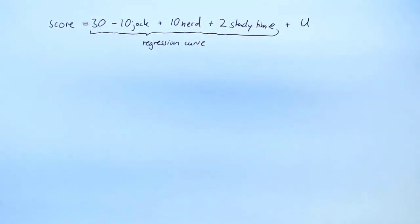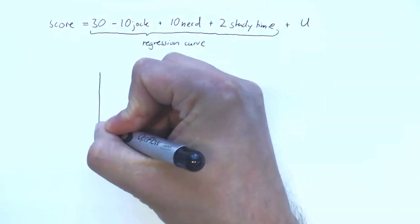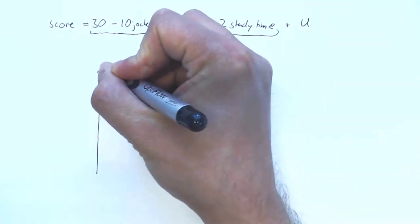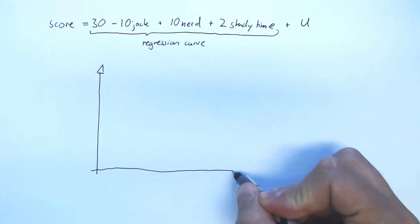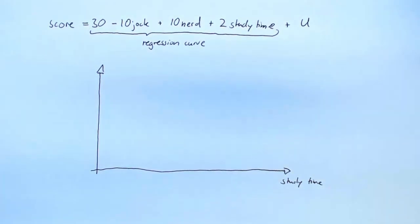We want to draw this regression curve and the way we're going to do it is draw it separately for jocks and nerds. Once we know whether someone is a jock or a nerd, the only thing that can vary is study time, and we just put that on the horizontal axis.